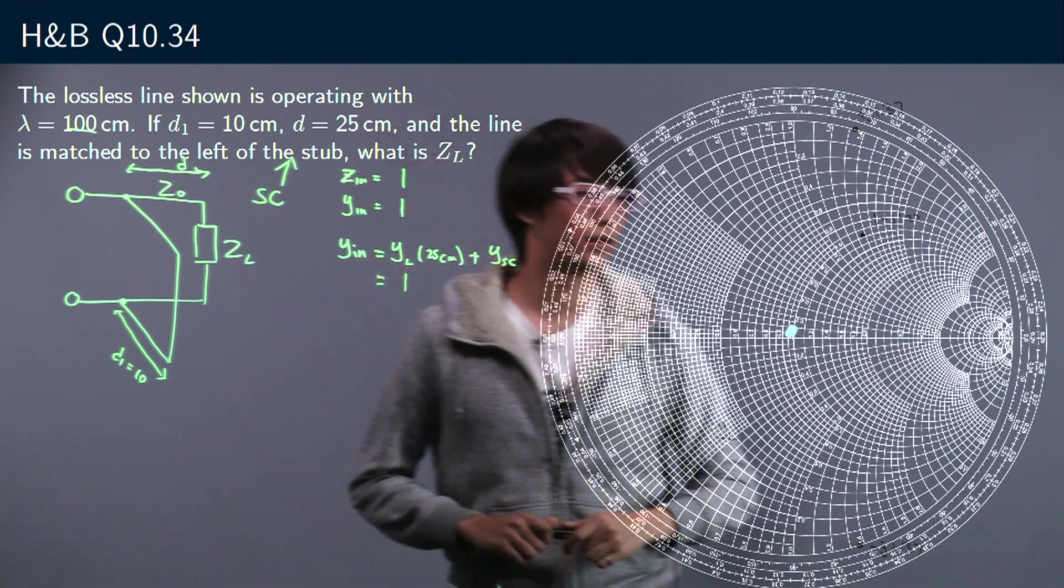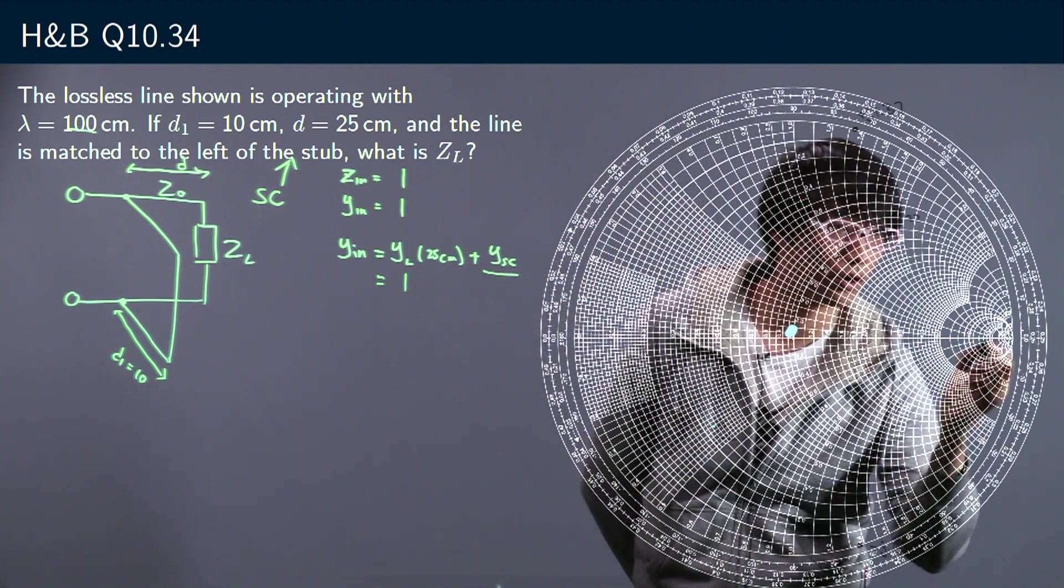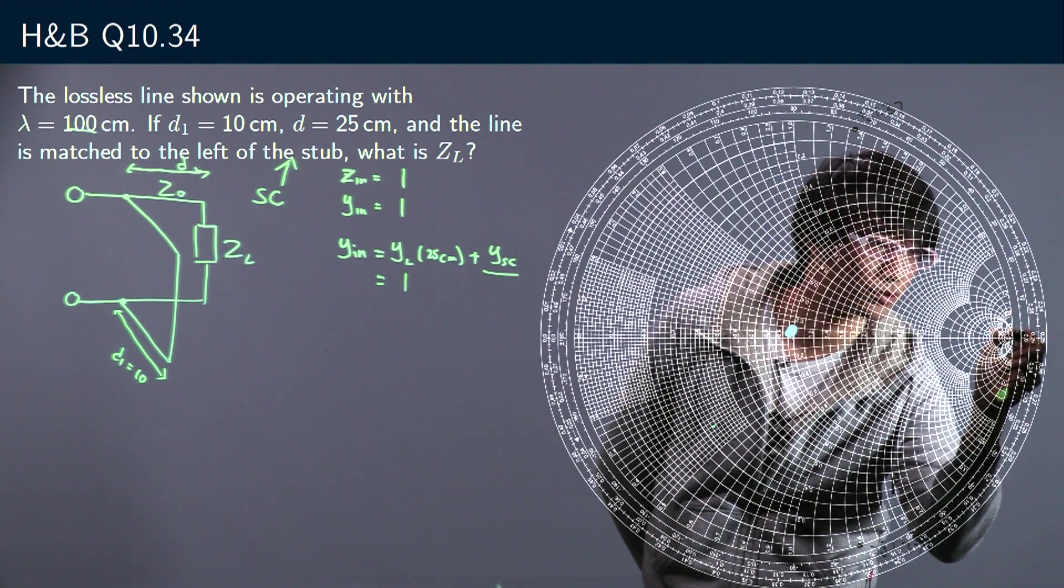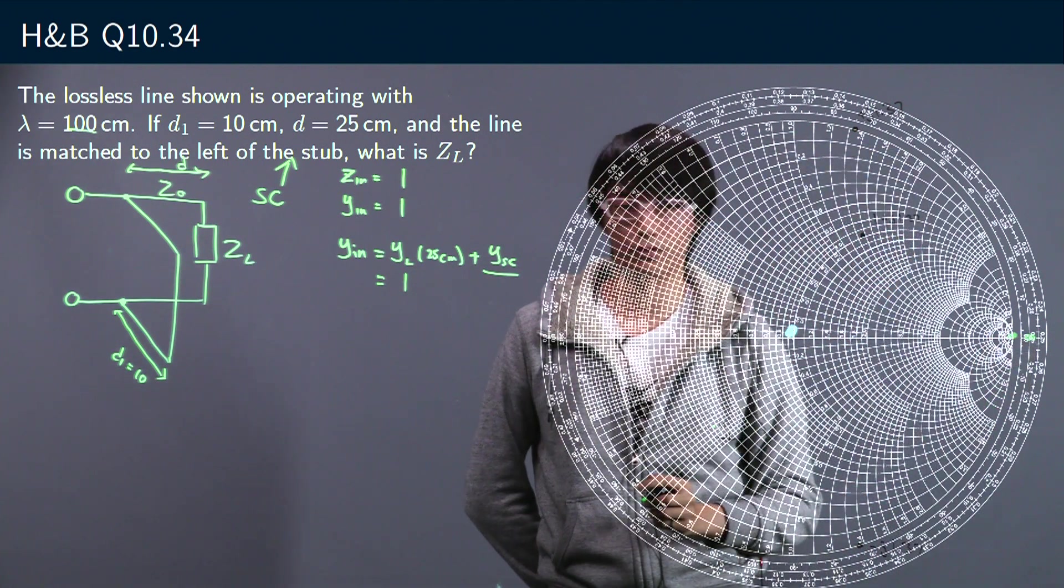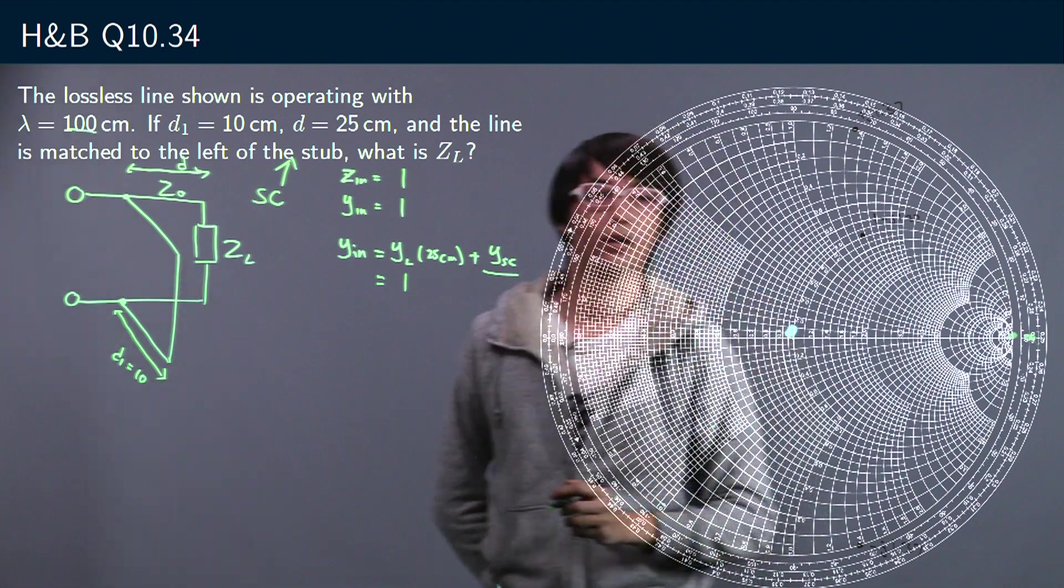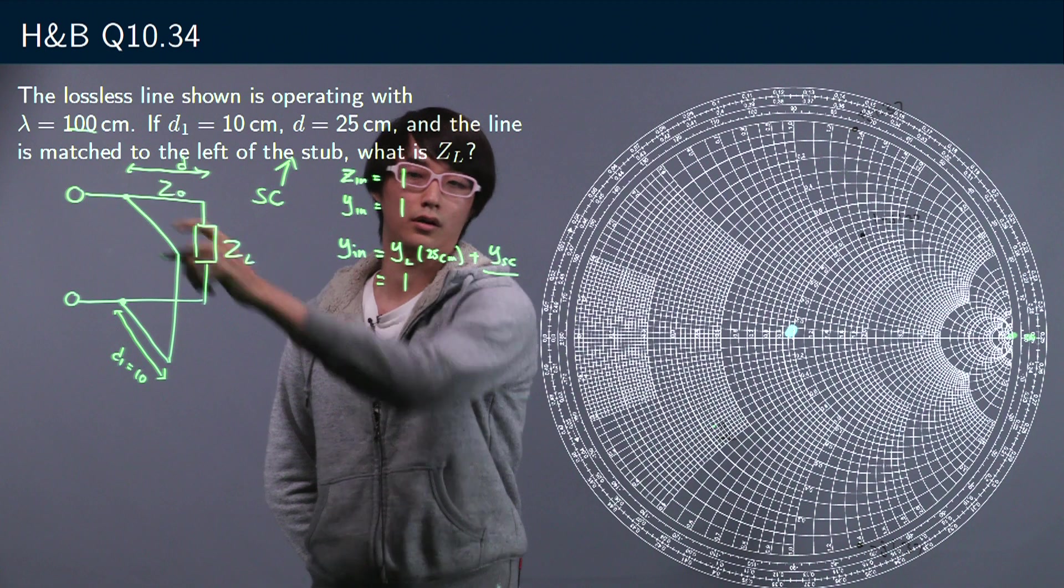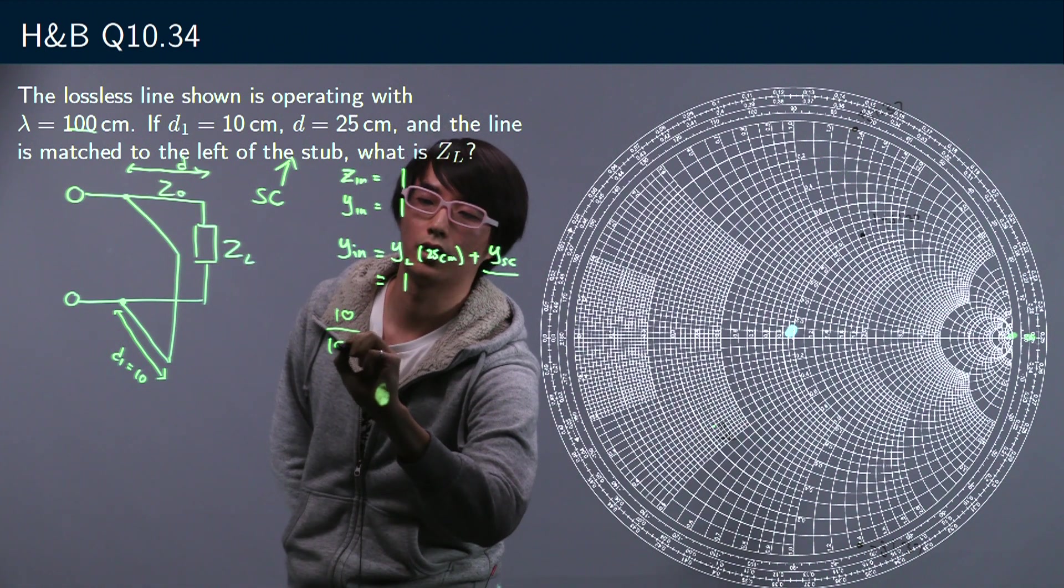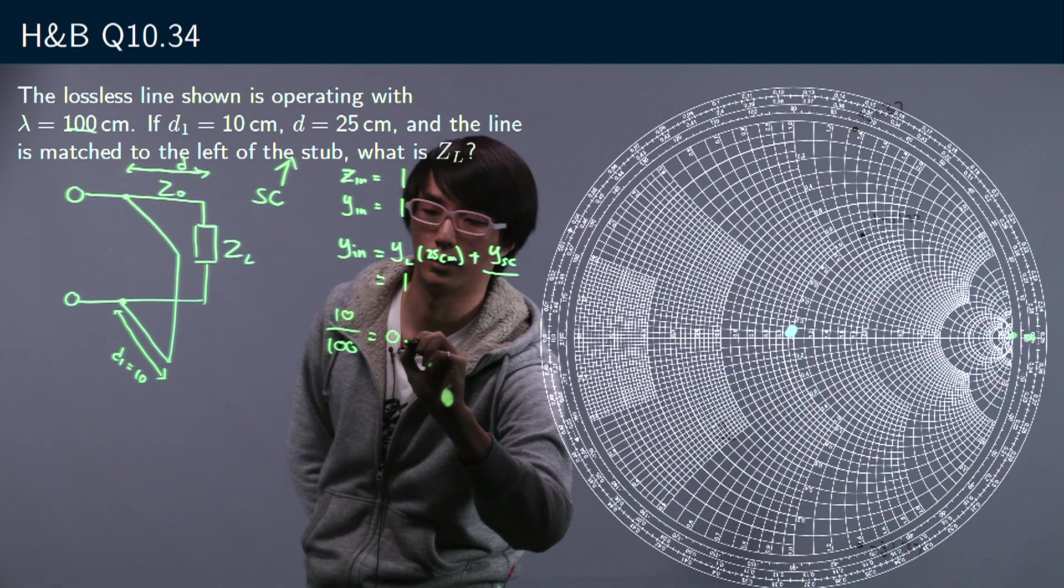So what we're gonna do is first we're gonna find out what this guy is. So starting from our short circuit point, that's roughly over there. We're gonna move one tenth of a lambda, so d1 is 10 centimeters, lambda is 100 centimeters. This should be fairly obvious, 0.1.